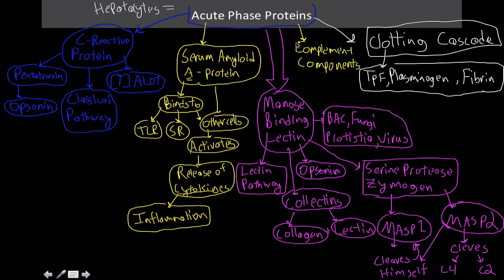Also produced in hepatocytes are complement components. The most important ones, present in high concentrations, are C3, C4, C9, and factor B. That's it for the acute phase proteins. Next, we'll talk about the actual roles that they play in context, not just in the abstract.